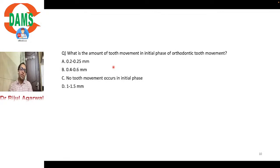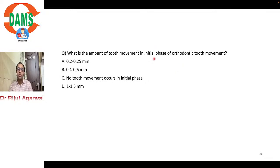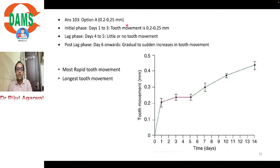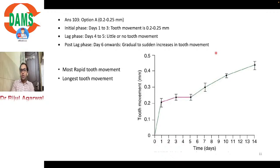Next question: what is the amount of tooth movement in the initial phase of orthodontic tooth movement? Orthodontic tooth movement is divided into three phases: initial, lag, and post-lag. The initial phase spans day one to day three, with tooth movement of approximately 0.2 to 0.25 mm. The lag phase occurs from day four to five with little or no tooth movement. The post-lag phase begins day six onwards with gradual to sudden increase in tooth movement. The correct answer is 0.2 to 0.25 mm.